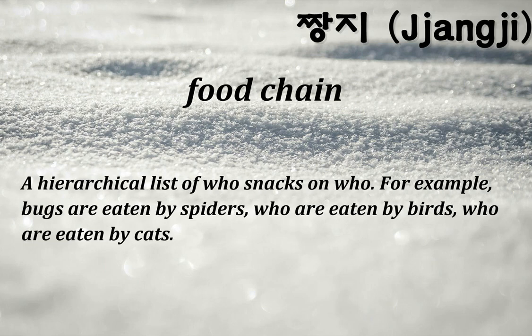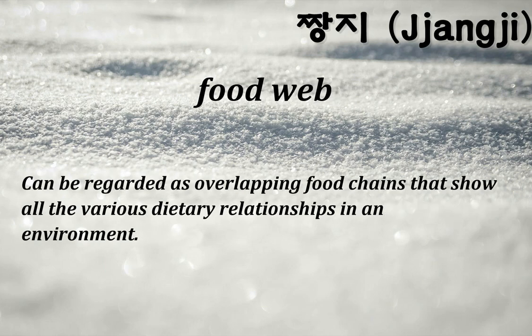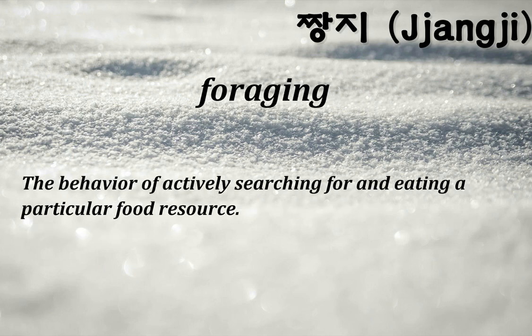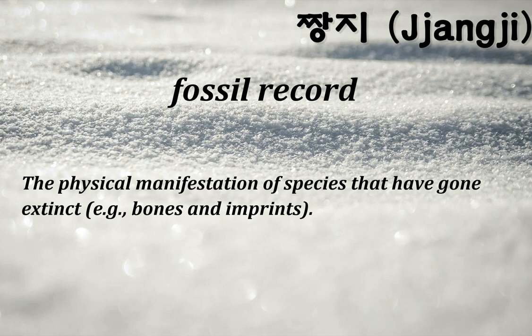Food chain: a hierarchical list of who eats whom — for example, bugs are eaten by spiders, who are eaten by birds, who are eaten by cats. Food web: can be regarded as overlapping food chains that show all the various dietary relationships in an environment. Foraging: the behavior of actively searching for and eating a particular food resource.